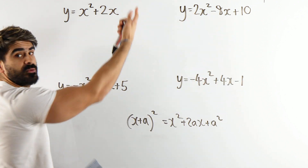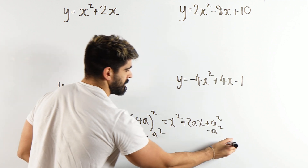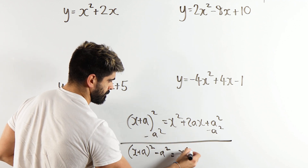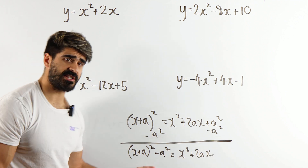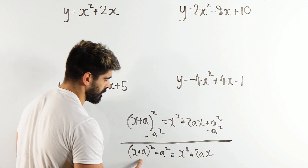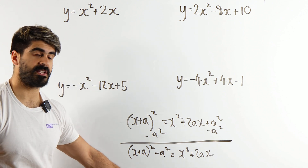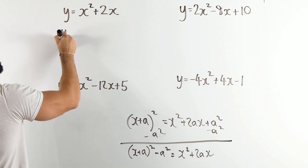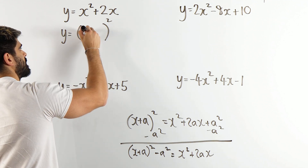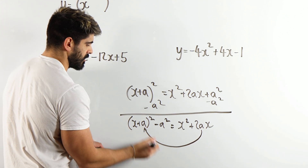So what I'm going to do is subtract a squared from both sides. I'm going to have x plus a squared minus a squared equals x squared plus 2ax. And this is completing the square. When you have a quadratic, you take the coefficient of x and you half it, then you subtract that number squared. So when we complete the square, we're looking at what squared gives you x squared — well, that's just x. What goes inside the bracket is half the coefficient of x.